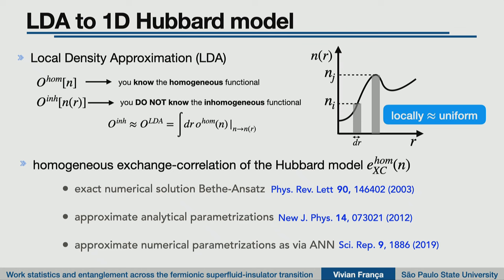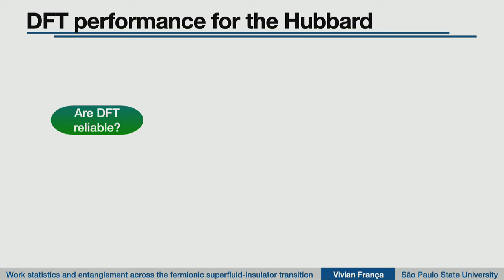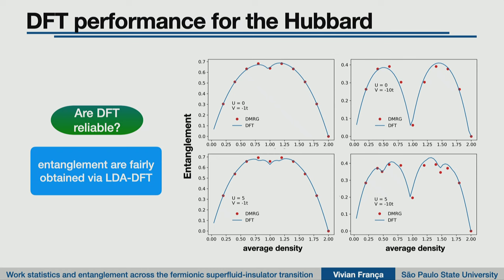We get the homogeneous exchange-correlation energy of the Hubbard model via exact Bethe ansatz numerical solutions. There are also analytical expressions — one we proposed some years ago — and recently we also proposed a neural network-based functional (ANN functional) for this object. There are several possibilities to implement this. And the key question is whether this LDA within DFT approach is reliable. We have very good results compared to exact DMRG data — the red dots are DMRG and the blue curve is DFT — so for this type of entanglement, it is fairly well obtained via our methodology.